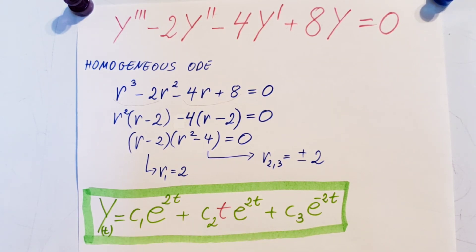See? Now this way it becomes different, and then plus the third root, which will be negative 2, that will give us c3 e to the negative 2t, and that should do it.